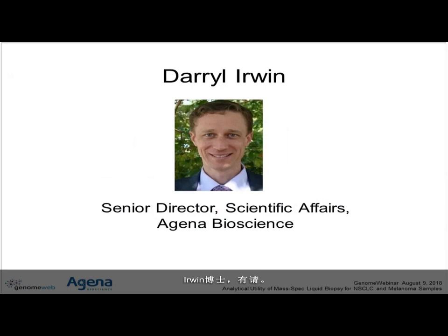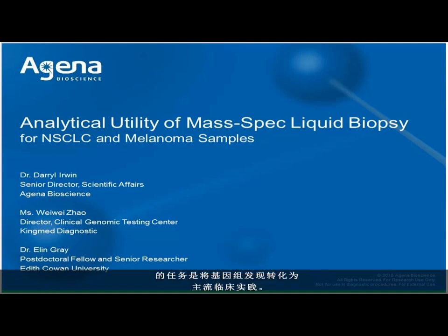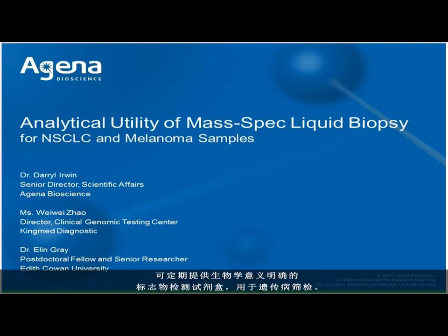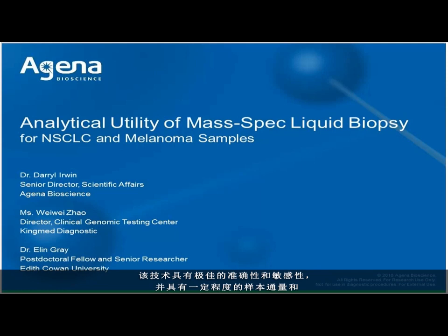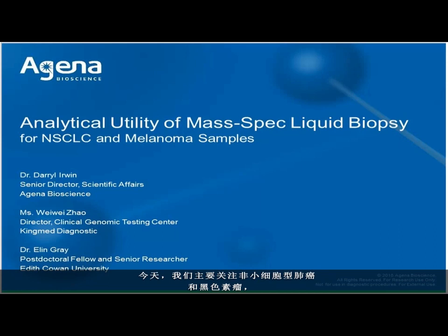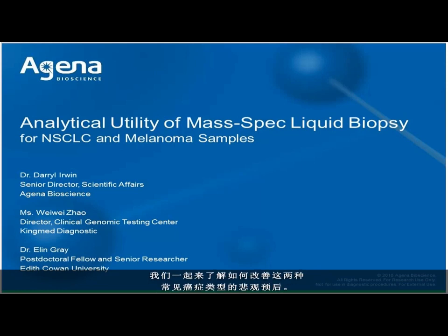Dr. Irwin, please go ahead. Thank you, Christy. At Agena Bioscience, our mission is to translate genomic discoveries into mainstream clinical practice. Our workhorse, the MassArray System, has empowered hundreds of clinical laboratories globally to routinely deliver panels of actionable markers for inherited diseases, pharmacogenomics testing, sample integrity, and oncology. This technology delivers exceptional accuracy and sensitivity with a level of throughput and cost structure that provides accessibility to all patients. Today, we're going to focus on non-small cell lung cancer and melanoma.